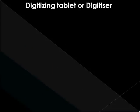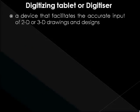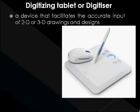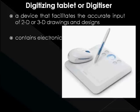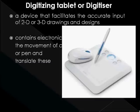A digitizing tablet is a device that facilitates the accurate input of 2D or 3D drawings and designs. It consists of an electronic tablet and a cursor or pen. A cursor is similar to a mouse, and a pen looks like a simple ballpoint pen but uses an electronic head instead of ink. The tablet contains electronics that enable it to detect movement of the cursor or pen and translate the movements into digital signals that it sends to the computer.